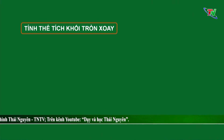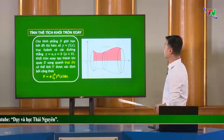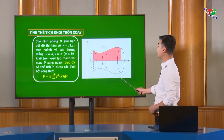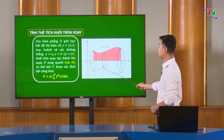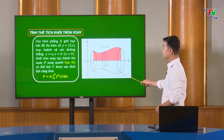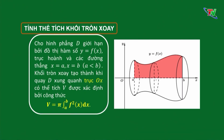Ứng dụng thứ 2 của tích phân đó là ứng dụng để tính thể tích khối tròn xoay. Phần được tô màu là hình phẳng D giới hạn bởi đồ thị của hàm số y bằng f(x), trục hoành và 2 đường thẳng x bằng A, x bằng B. Khi chúng ta quay hình phẳng D xung quanh trục Ox, thì sẽ tạo ra một khối tròn xoay. Và khối tròn xoay này có thể tích được xác định bởi công thức: V bằng π nhân tích phân từ A đến B của f²(x).